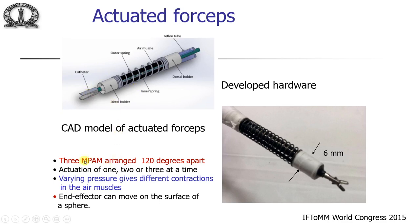The CAD model consists of three MPAMs arranged 120 degrees apart. If you actuate one, two, or three at a time, the tip moves in the resulting direction. By varying the air pressure in each tube you control how much it moves, since contraction depends on pressure. Using all three we can make the tip move on the surface of a hemisphere or sphere.